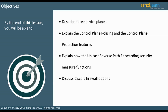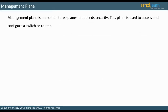Let us start our discussion on the types of device planes that need security. There are three planes of a device that need to be secured: management plane, control plane, and data plane. The management plane is used to access and configure a switch or a router.